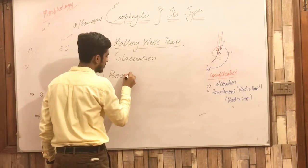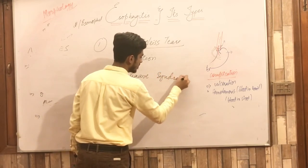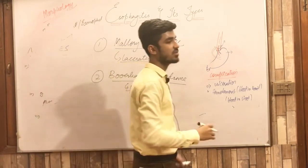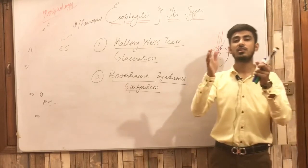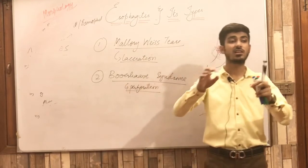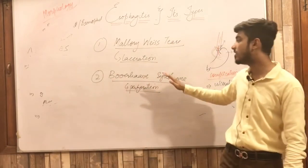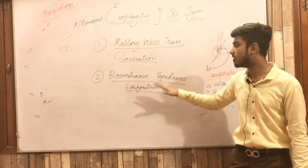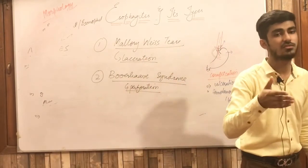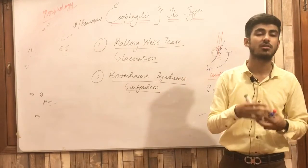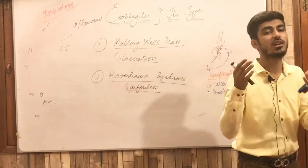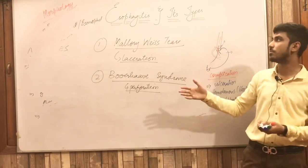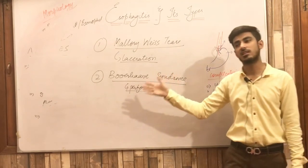The second disease is Boerhaave syndrome, which is perforation of the esophagus — different from laceration. This occurs due to sudden esophageal distension to such an extent that the esophagus becomes perforated and ruptured. This is a very dangerous condition requiring immediate surgery. It may resemble or be confused with myocardial infarction, as the patient presents with similar symptoms such as tachypnea, shock, and chest pain.